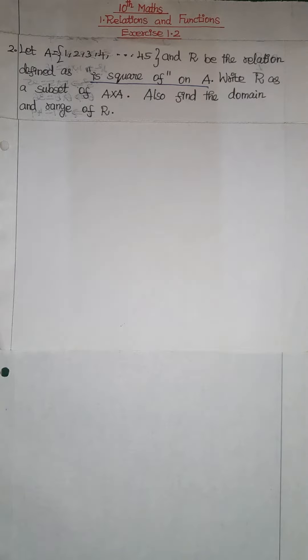Welcome to Guna Maths and Arts, 10th Maths Chapter 1, Exercise 1.2, second sum. Question: A is equal to 1, 2, 3, 4, up to 45. And R be the relation defined as is square of on A. Write R is a subset of A cross A. Also find the domain and range of R.